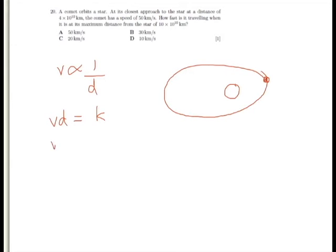So, v1, d1, it must be equal to v2, d2. We're trying to find v2 here, so let's rearrange this. V2 equals v1, d1, divided by d2.